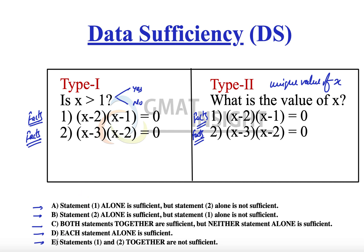Option D says that each statement alone is sufficient — meaning the question can be answered using statement 1 alone as well as using statement 2 alone. Option E says that statements 1 and 2 together are still not sufficient. After the two statements are individually insufficient and we combine them, there are only two possible results: either together they are sufficient, in which case we answer C, or even together they are not sufficient, in which case we answer E.